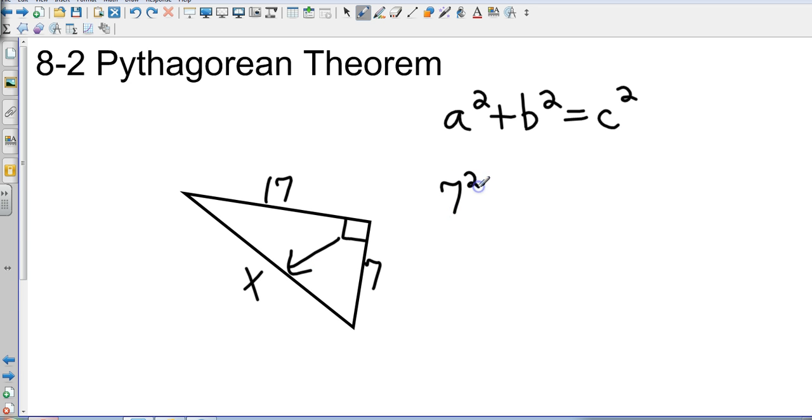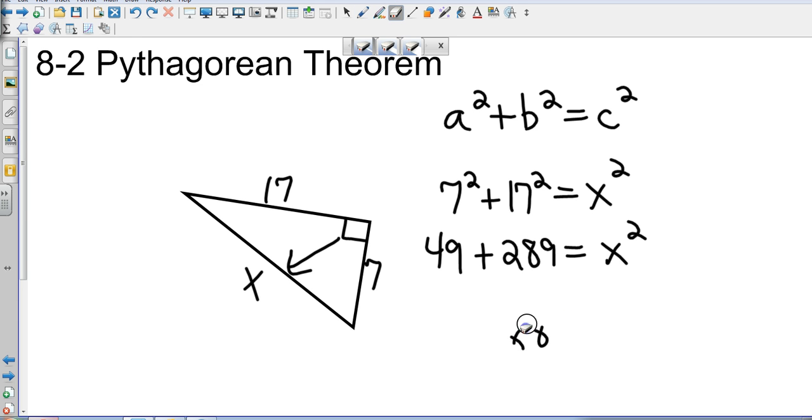So this is going to be 7 squared plus 17 squared equals x squared. That's going to give me 49 plus let's see 17 squared is 289 equals x squared. And then 289 and 49, whoa boy my addition's really good you'd think I taught math or something, that's going to be 338.